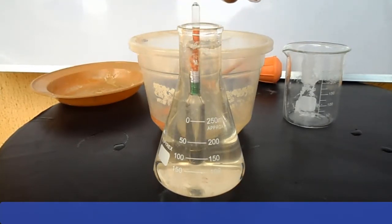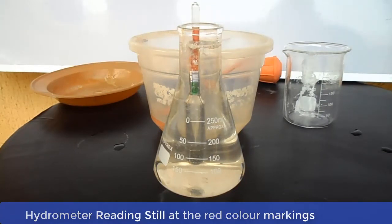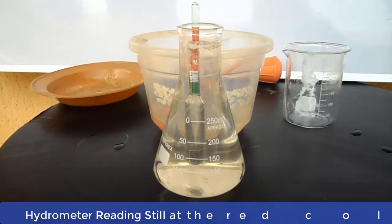As you can see, the hydrometer is still at the red mark. Now if the hydrometer reading is persistently sitting at the red mark, that could mean that water is far more than the caustic soda. Hence, we will now reverse our action. We will now add more caustic soda to the solution instead of water.